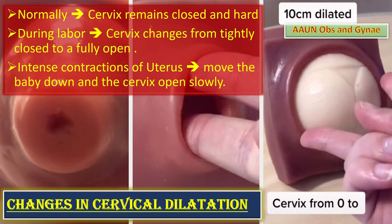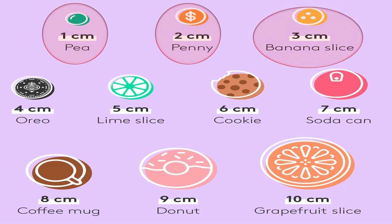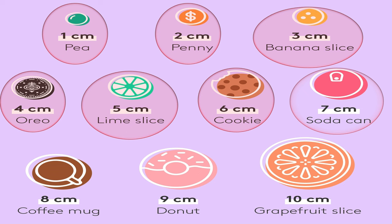Cervical dilatation sizes can be compared with everyday items: one centimeter is like the size of a pea; two centimeters like a penny; three centimeters like a banana slice; four centimeters like an Oreo biscuit; five centimeters like a lime slice; six centimeters like a cookie.